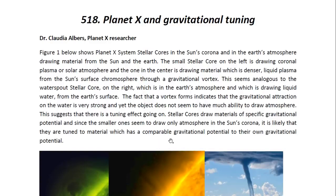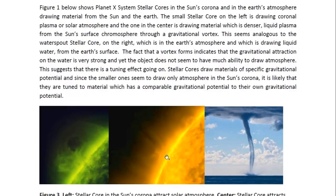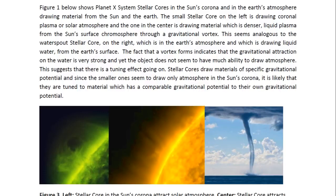Figure one below shows Planet X system's stellar cores in the Sun's corona and in the Earth's atmosphere, drawing material from the Sun and the Earth. The small stellar core on the left is drawing coronal plasma or solar atmosphere, and the one in the center is drawing material which is denser — liquid plasma from the Sun's surface chromosphere through a gravitational vortex. This seems analogous to the waterspout stellar core on the right, which is in the Earth's atmosphere and which is drawing liquid water from the Earth's surface. The fact that a vortex forms indicates that the gravitational attraction on the water is very strong, and yet the object does not seem to have much ability to draw atmosphere. This suggests that there is a tuning effect going on.